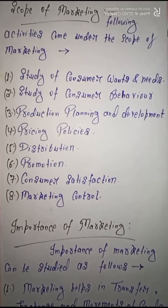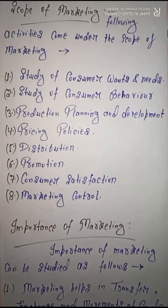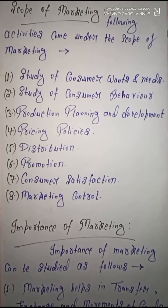Next is distribution. The distribution of the product makes it available to the customer. You will follow the distribution process and arrange transportation facilities. With transportation facilities, you will set a chain of distribution for your product. The decision in the chain of distribution is taken on the basis of marketing, so this is also part of marketing, and through it, consumer goods will be available at the right time.